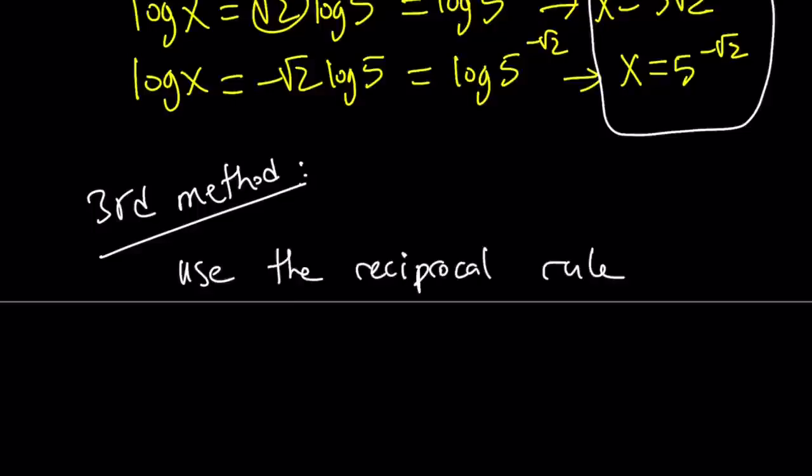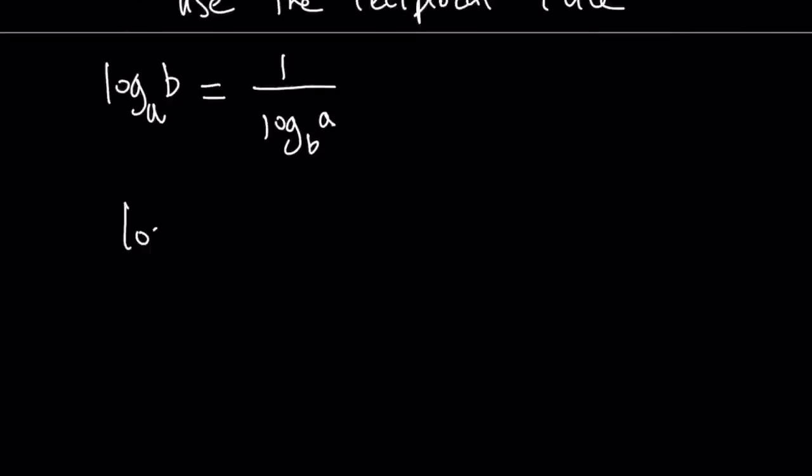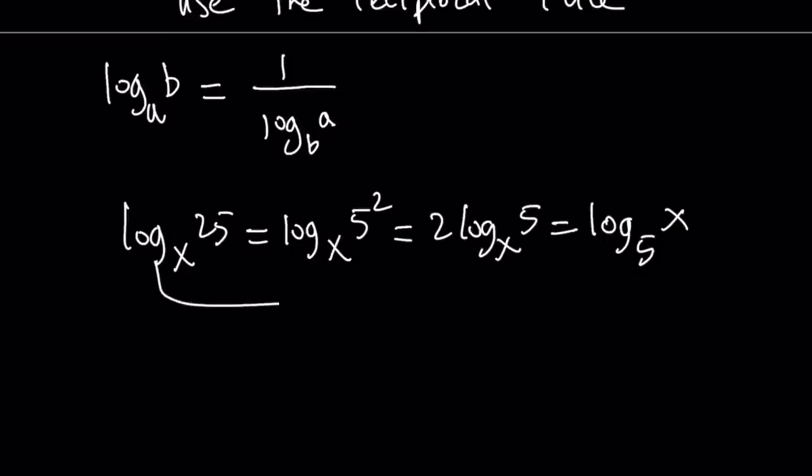The reciprocal rule works like this. If you have log b with base a, then it can be written as 1 over log a with base b. That's what we're going to use. So, log 25 with base x can be written as log 5 squared. And then that is 2 times log 5. Of course, we're talking about base x here. And then that is equal to log x. Because these two are equal. That's given. So now these two are equal. Which is kind of cool because we can use the reciprocal property.